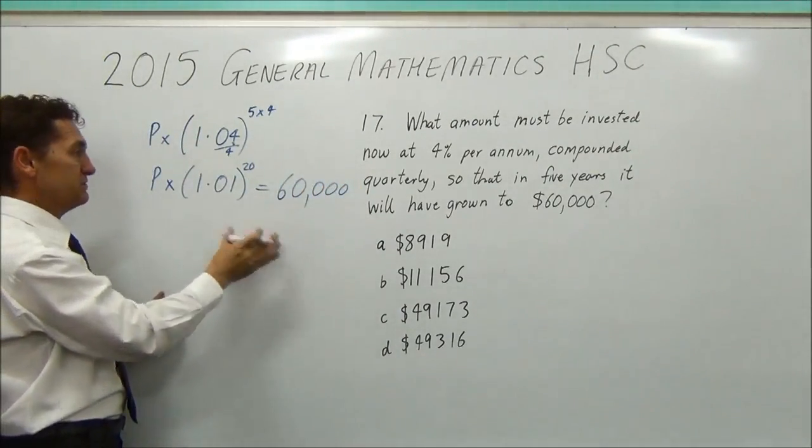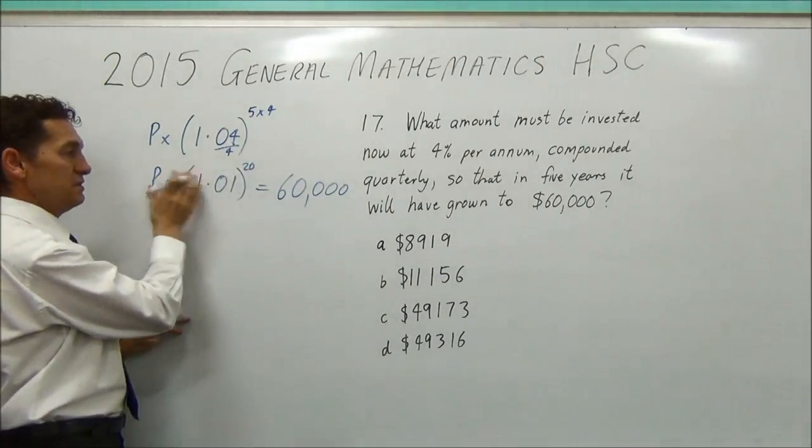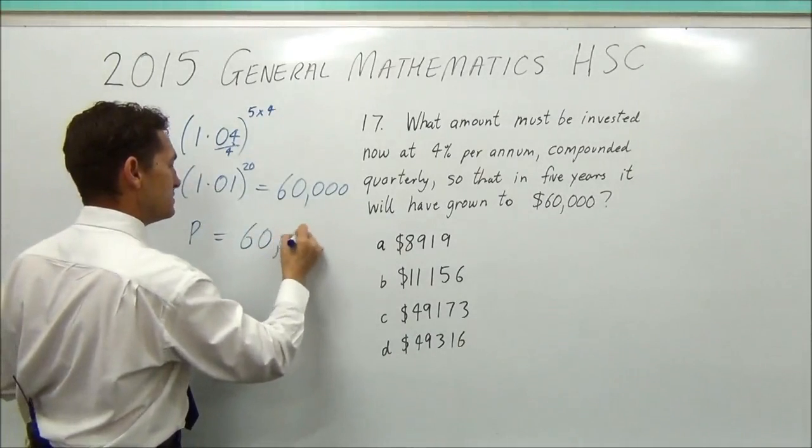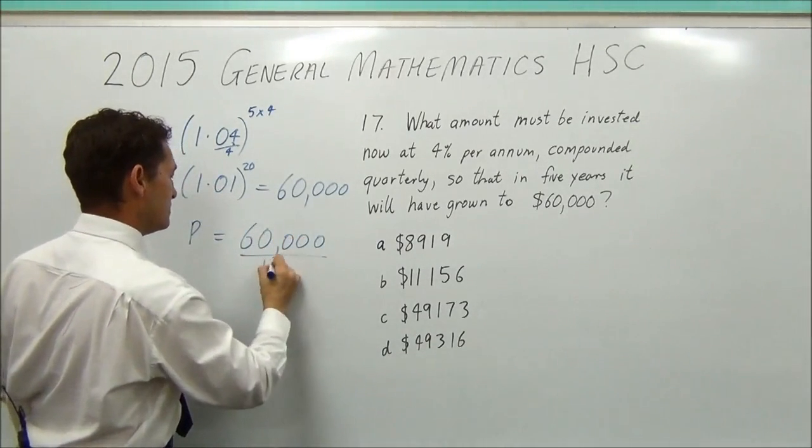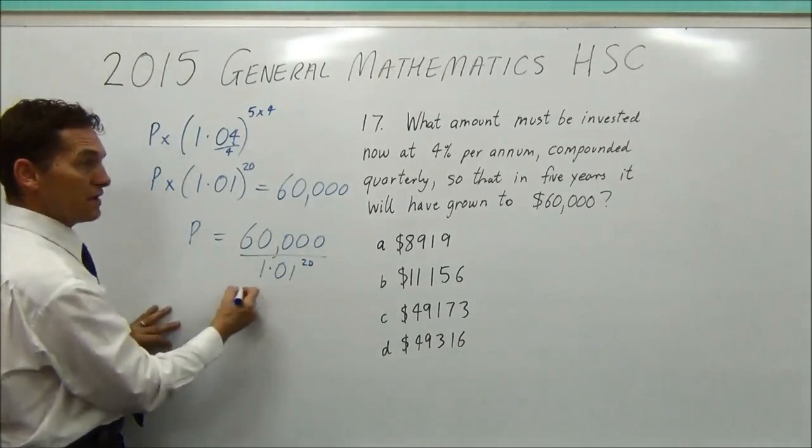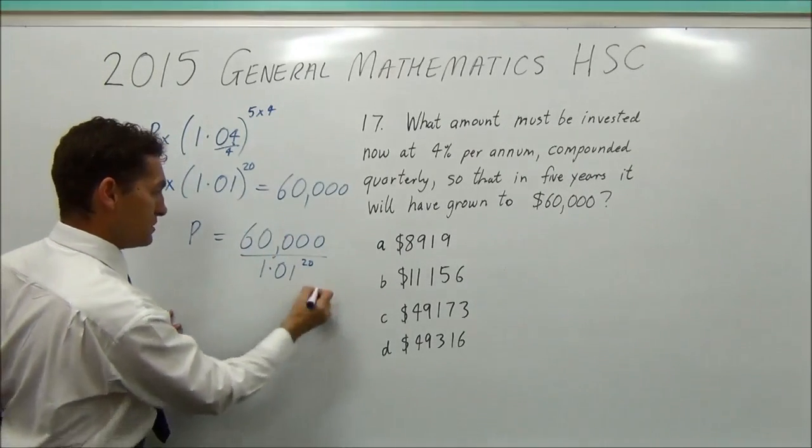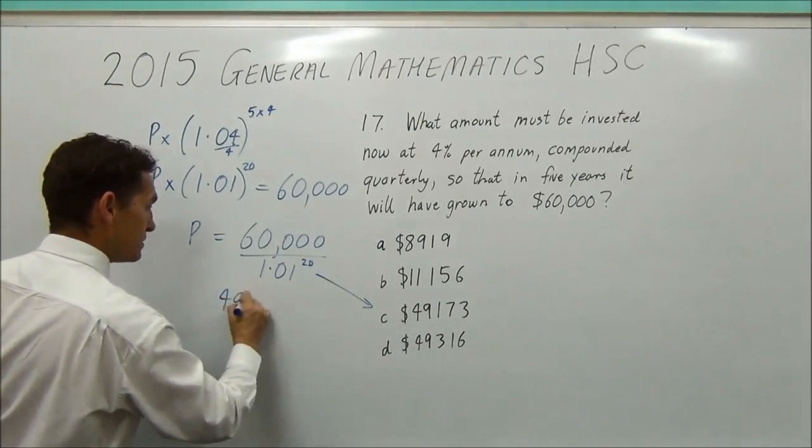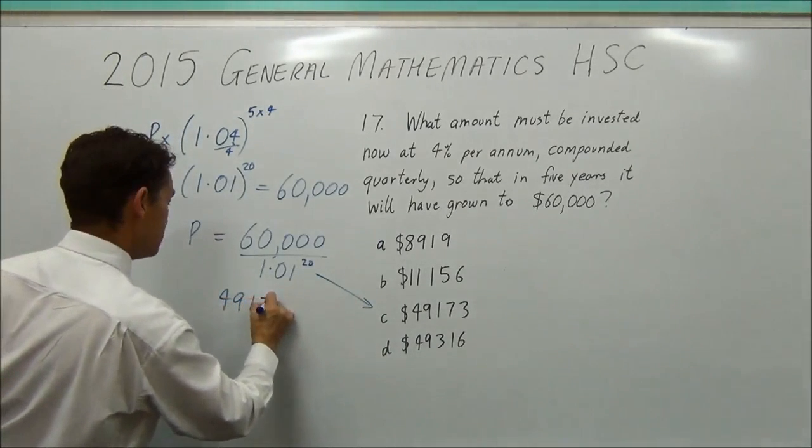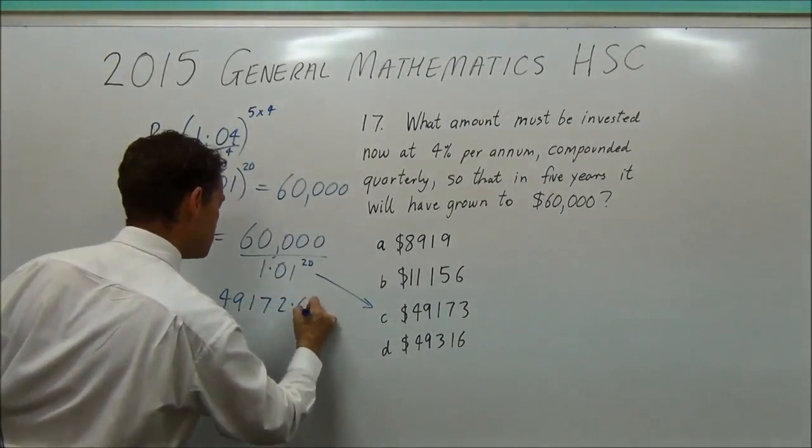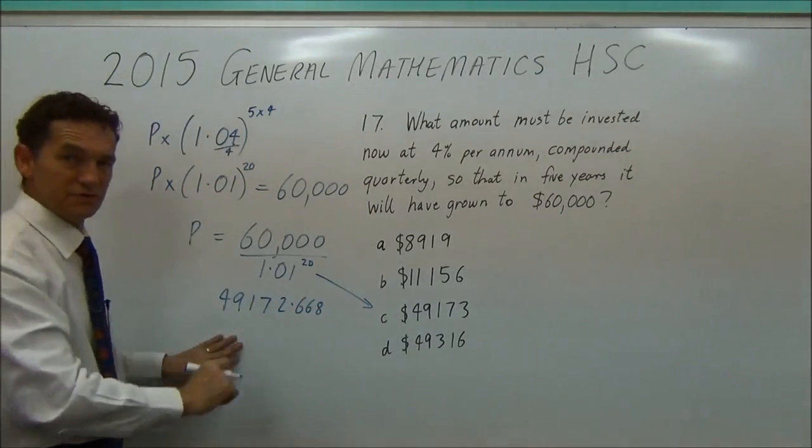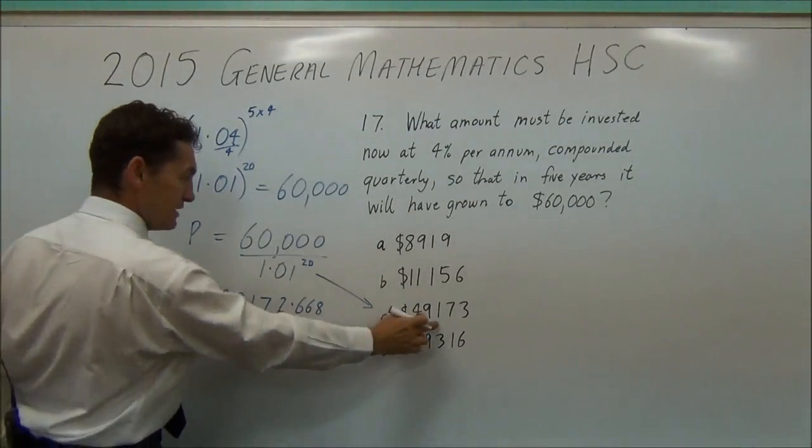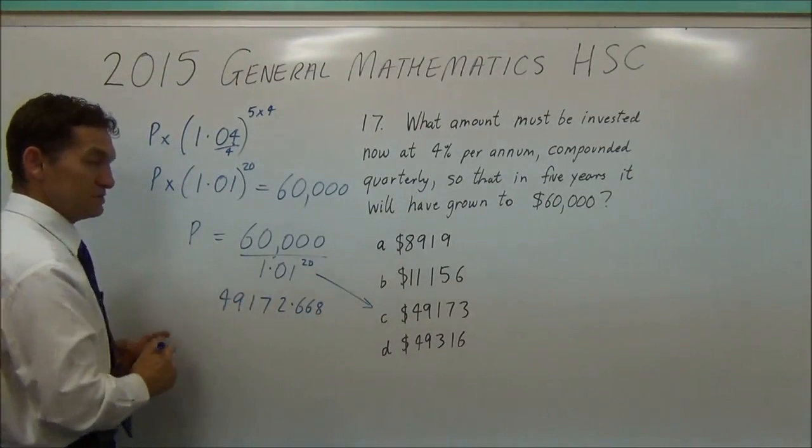So all you do is a simple division. This P equals this divided by this. So you're going to get P equals 60,000 divided by 1.01 to the 20, and that will give you pretty close to that number. So it actually gives you 49172.668. And that's pretty close to that number if you round that up, which is the number they're looking for.